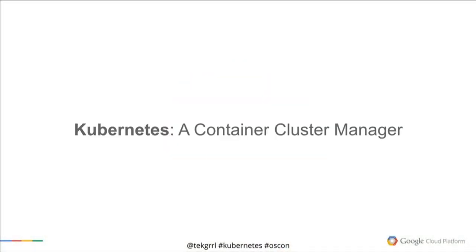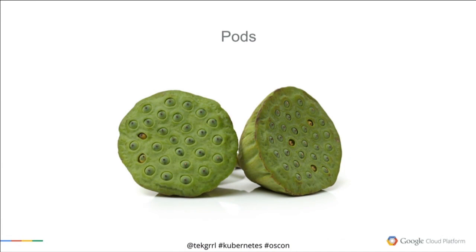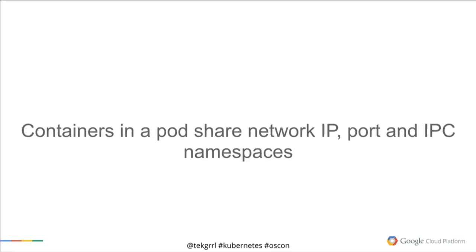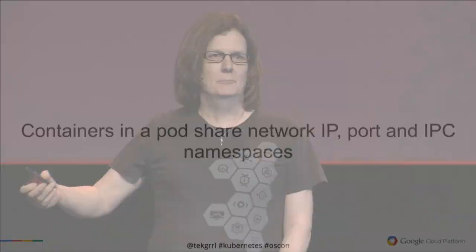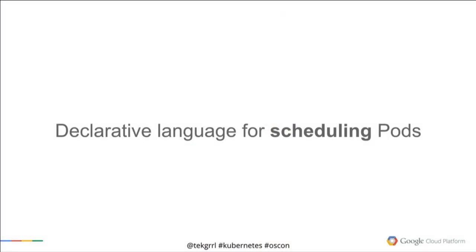We get to Kubernetes itself, with this interesting logo. Kubernetes is a canonical container cluster manager. It's not a reference implementation — it's open source, but it's production ready. You can use it today. Interestingly, Kubernetes doesn't actually schedule containers. It runs things called pods. Pods are effectively modeling an application-specific logical host that will host containers. Containers in a pod talk to each other via localhost, like they would if they were on the same machine. They share the same network IP, port, and IPC namespaces. Pods have IP addresses that are routable — no NAT involved — meaning pods can talk to each other regardless of which node they're running on.